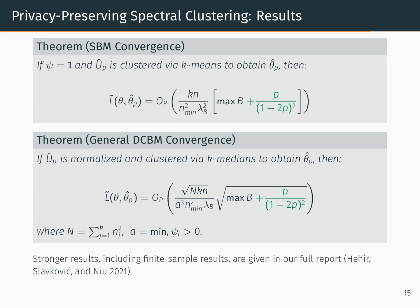The results for the more general DCBM are similar. Here we normalize the rows of û_p to have unit norm and cluster them via k-medians to obtain θ̂_p, obtaining a convergence rate that once again has this additive term of p/(1 - 2p)^2 within the last square root. In both cases, we note that if this p/(1 - 2p)^2 term is of the same order as the largest value in B, the convergence rate is unaffected. On the other hand, if the largest entry in B goes to 0 while p remains fixed, we see a slower convergence rate.